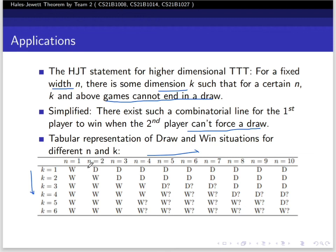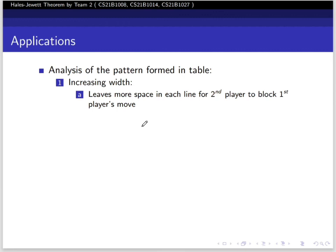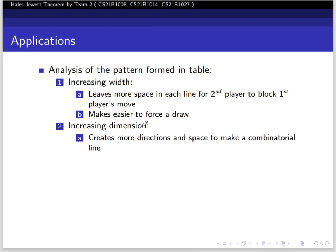If we analyze the pattern, increasing the width leaves more spaces in each line for the second player to block the first player's move, making it easier to force a draw. Increase in dimension creates more directions and space to make combinatorial lines for player one, making it easier to force a win.